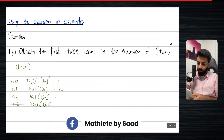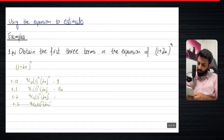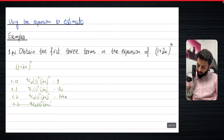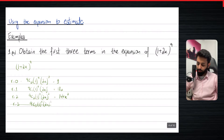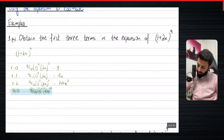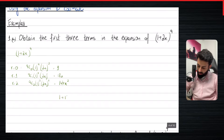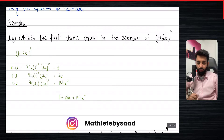And let's work out nine C two, multiplied by two x whole square — so that means multiplied by four. So I'm looking at 144x squared. Let me double check: nine C two is 36, 36 times four is indeed 144. So now we have the expansion of the first three terms, let's write it down nicely. The expansion is one plus 18x plus 144x squared.